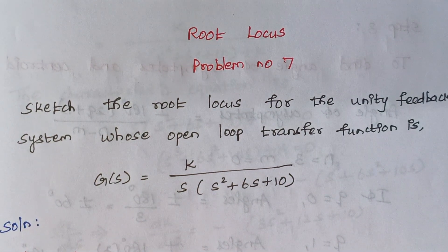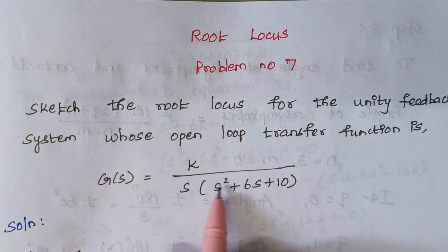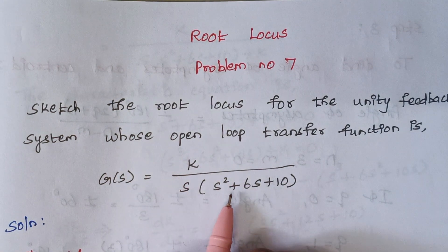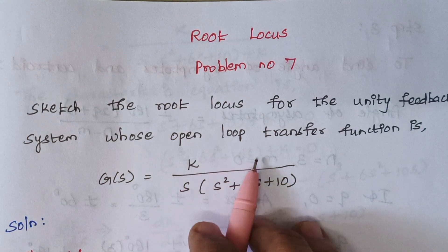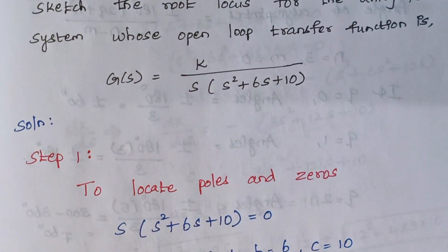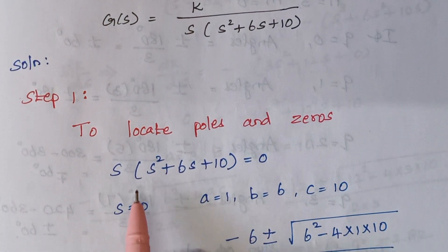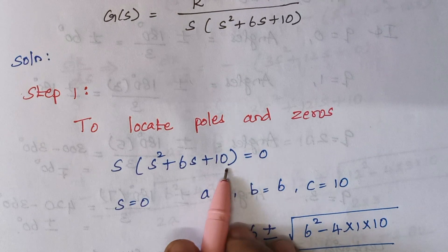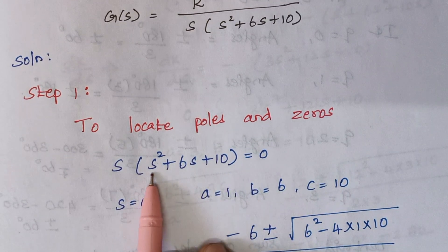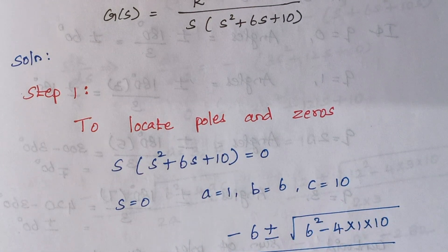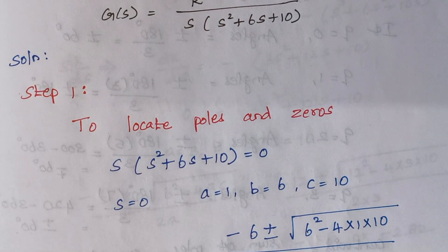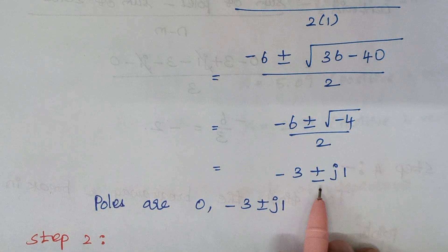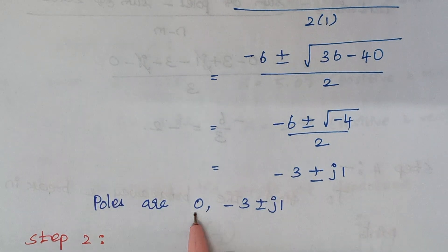From the transfer function, let's identify how many poles and zeros we have. Looking at the denominator, the maximum power is 2 and here it is 1, so totally we will have 3 poles. In the numerator we don't have any S term, so there are no zeros. The first step is to locate the poles and zeros. Equating the S term to 0 gives S = 0, and from the quadratic equation with A=1, B=6, C=10, solving gives poles at minus 3 plus or minus J1. So we have three poles: 0, minus 3 plus J1, and minus 3 minus J1.